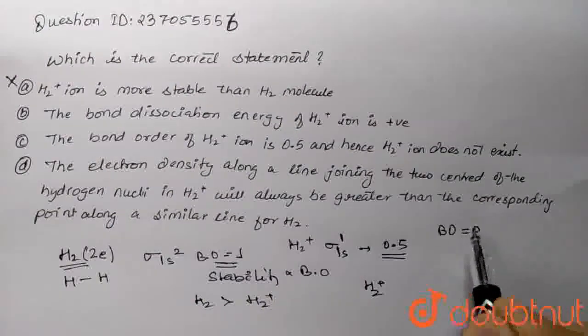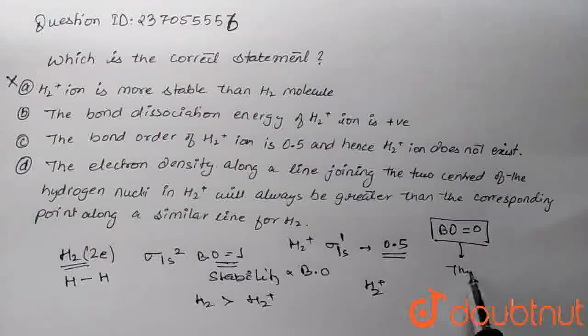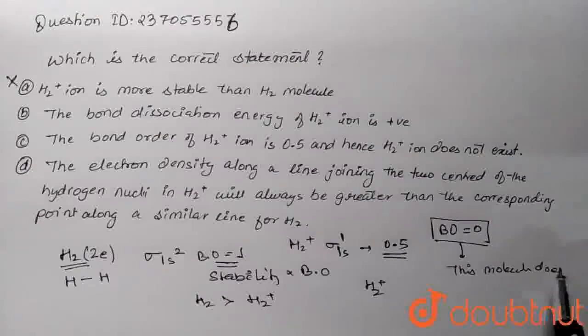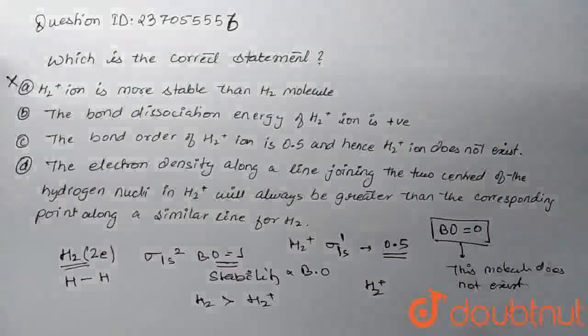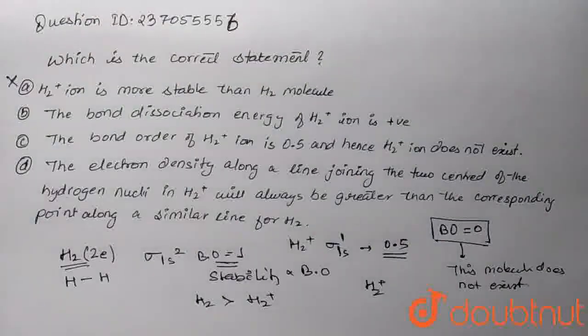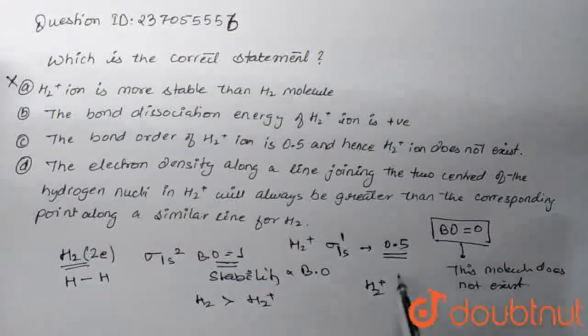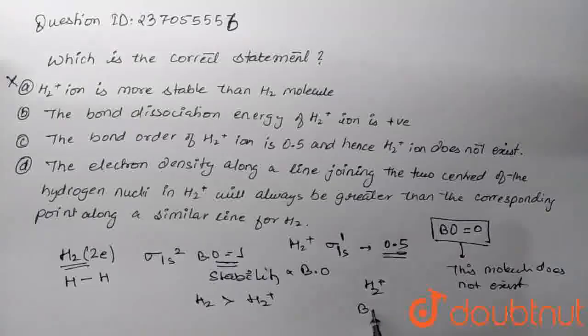There is some bond, some interaction, that's why the bond order is 0.5. If the bond order of a molecule is zero, then we will say this molecule does not exist.